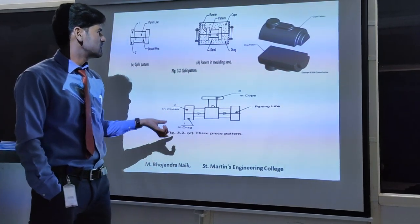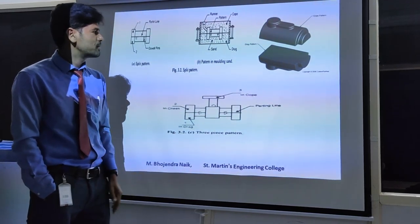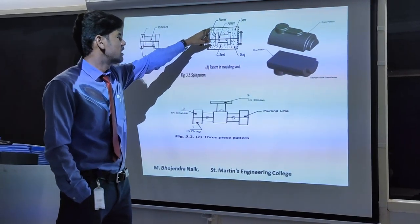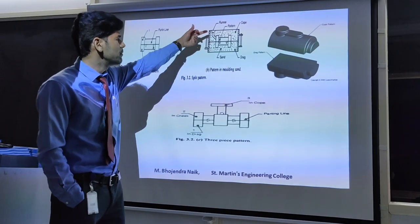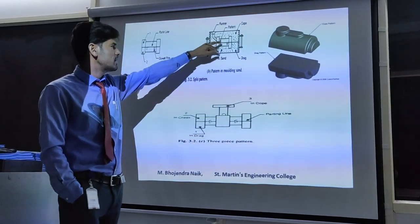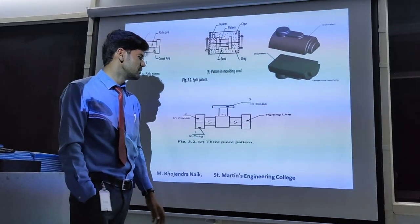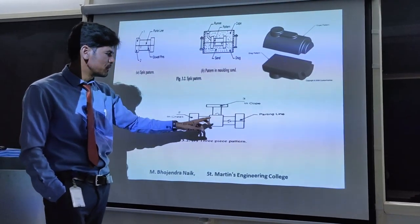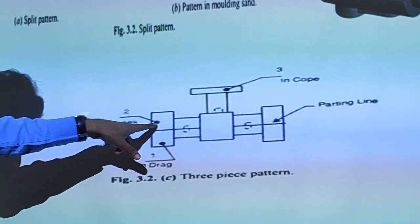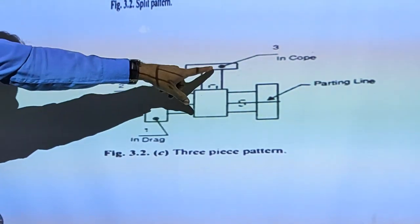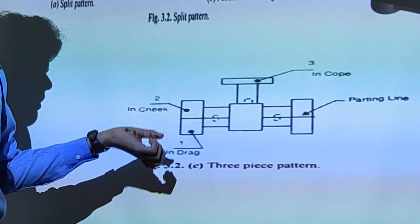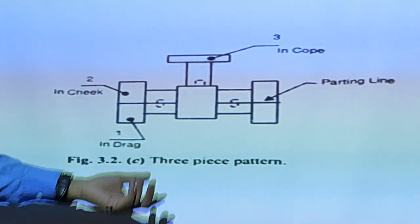If the pattern has more than two pieces, it is called a multi-piece or three-piece pattern. At that time, you require three boxes: the top box is the cope box, the bottom is the drag box, and in between the cope and drag boxes, we add another box called the cheek. The line between the two pattern sections is called the parting line. For a two-piece pattern, we have only cope and drag boxes.